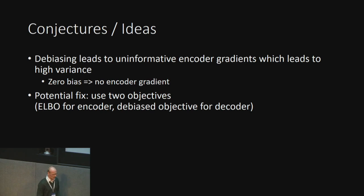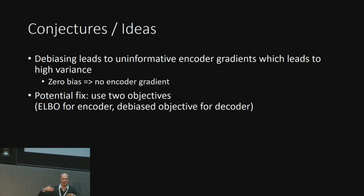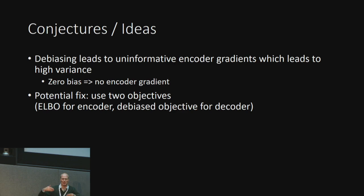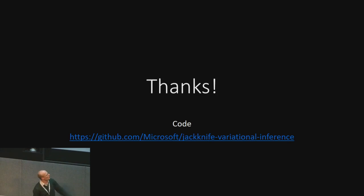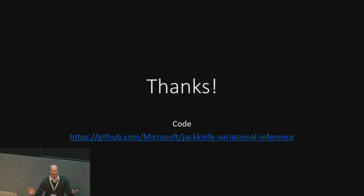My hypothesis is that higher-order debiasing actually deteriorates encoder learning. A way to test this is to use two objectives: compute JVI to update the decoder parameters, but still use the normal ELBO objective for the encoder. I haven't tested that yet, but that's the direction. Sorry for going one minute over time — thank you for your attention. The code is online at GitHub and the paper and reviews are online.